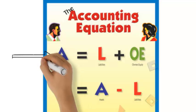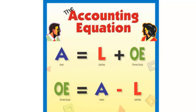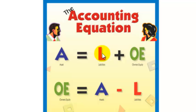There are two ways that we can look at the accounting equation. The first one you've already seen: if I buy an asset, it is funded by how many liabilities I have, and also how much the owner puts in him or herself.